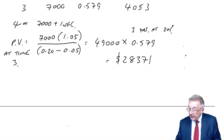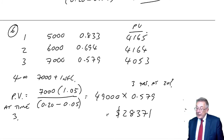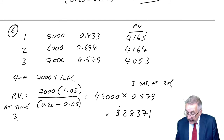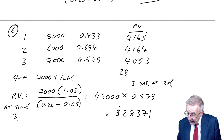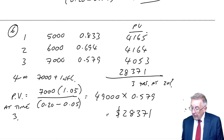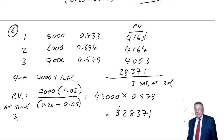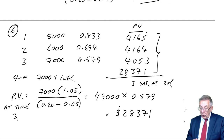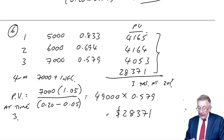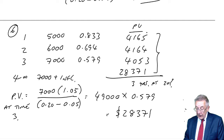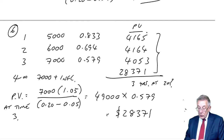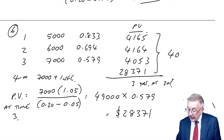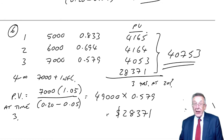Now we find the total present value. We'd already worked out the present value of the first three flows, and now we know the present value of flows from 4 to infinity is 28,371. Therefore, the total present value — adding them together — is 4,165 plus 4,164 plus 4,053 plus 28,371, giving us 40,753.